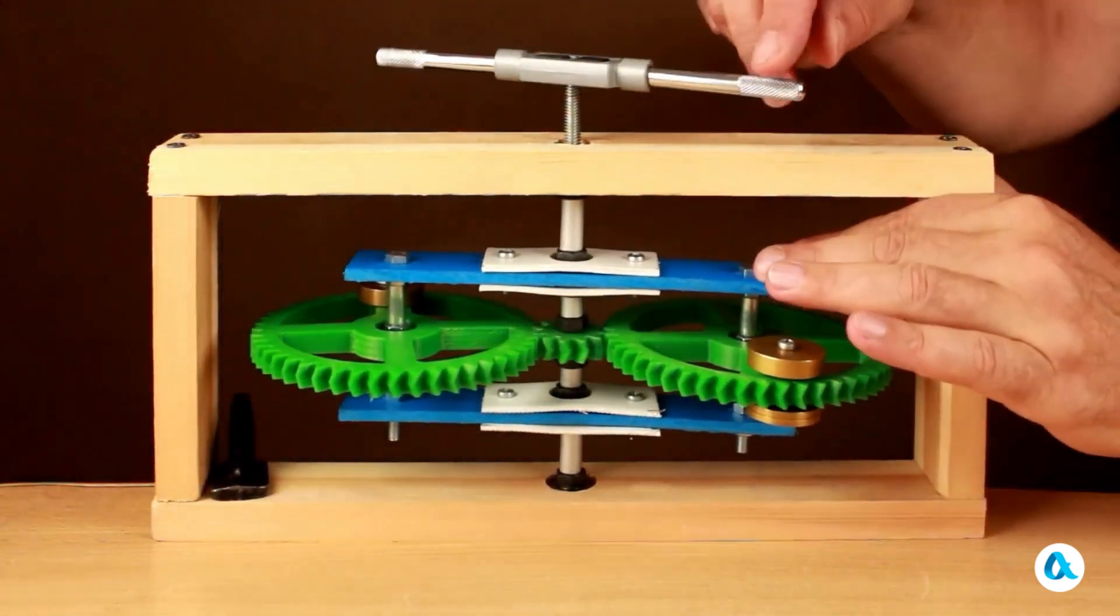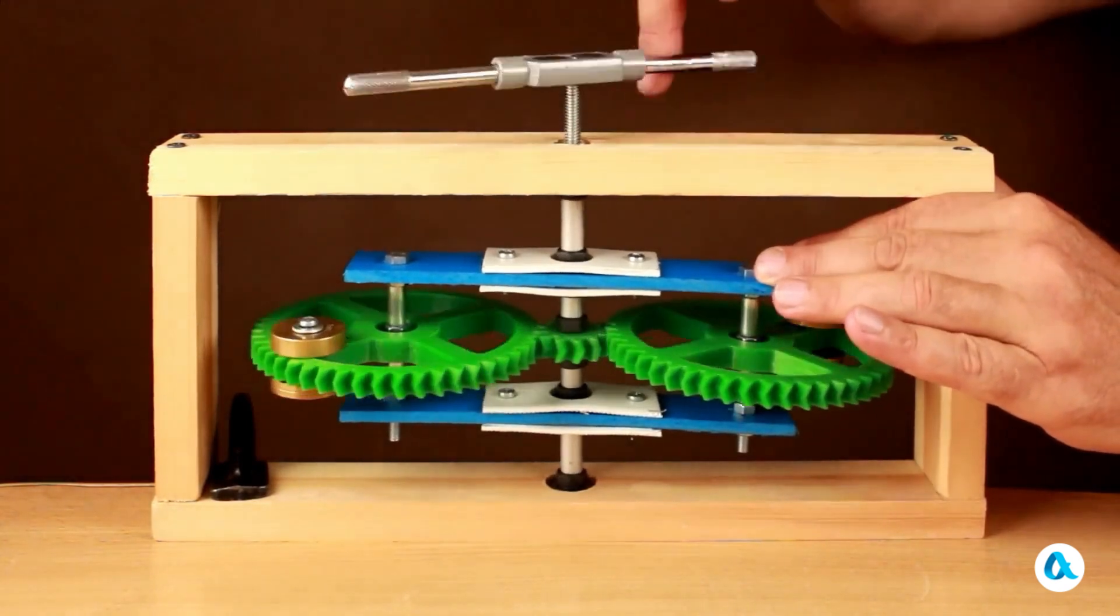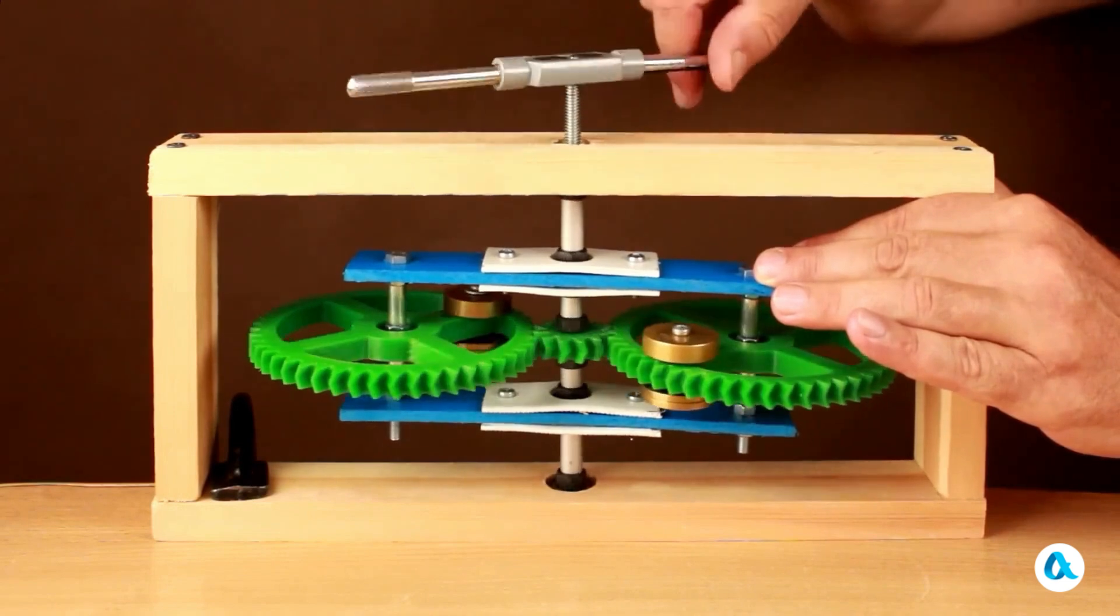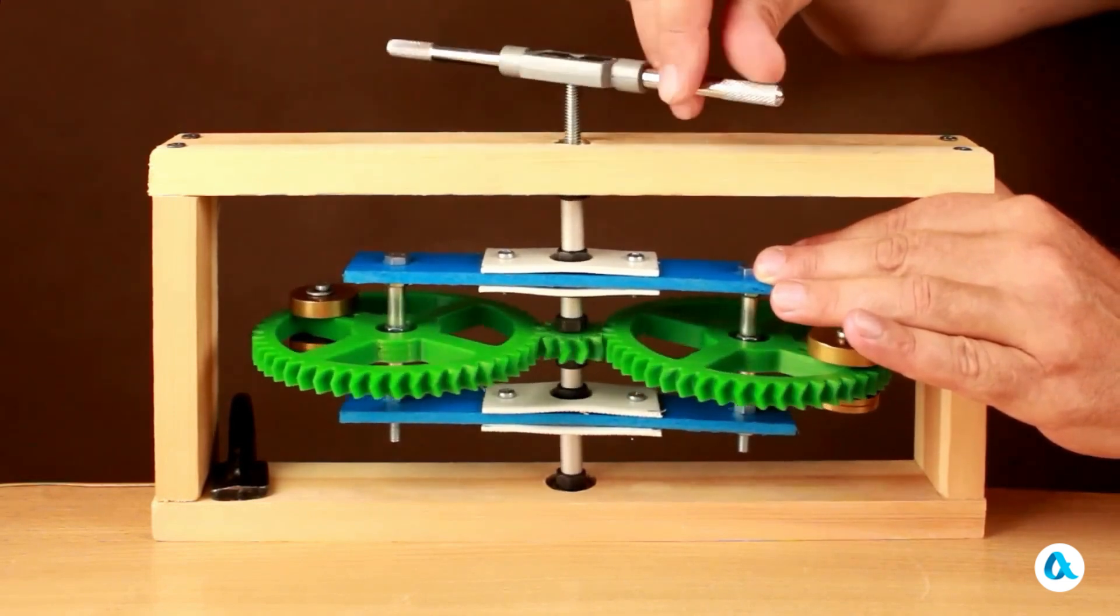I can hold the carrier with my hand, and then I will rotate the handle, causing the central gear to rotate along with the side satellite gears with my hand.